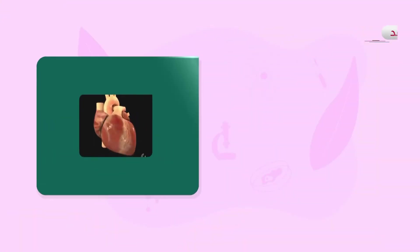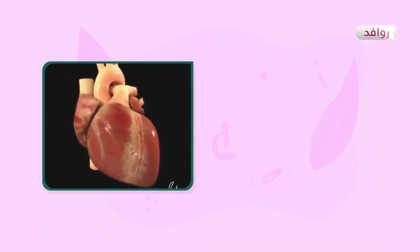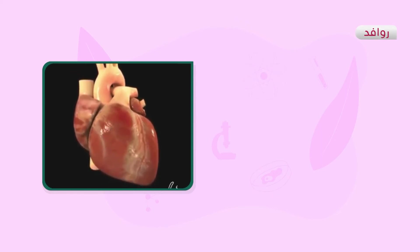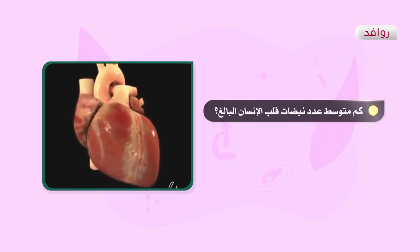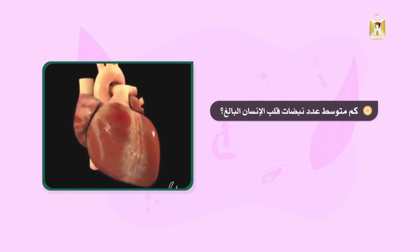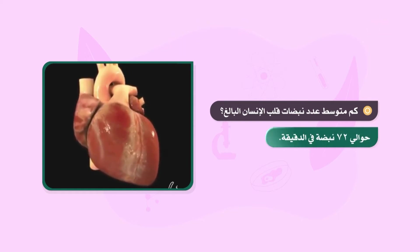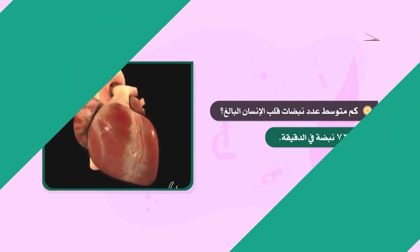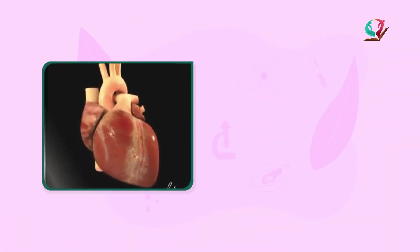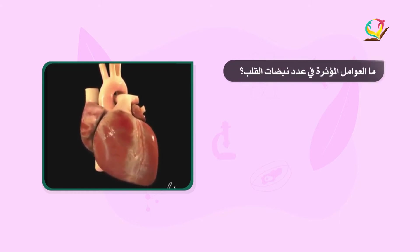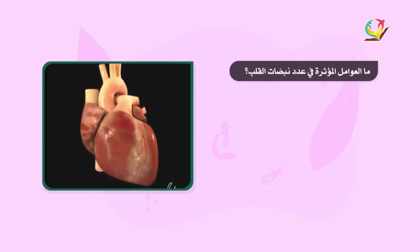إن القلب ينقبض لتوزيع الدم على جميع أنحاء الجسم. يبلغ متوسط عدد نبضات قلب الإنسان البالغ 72 نبضة في الدقيقة، ولكن هذه القيمة قد تتغير من وقت لآخر.